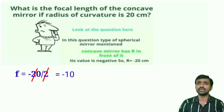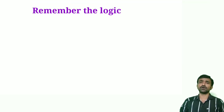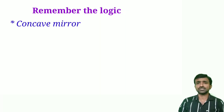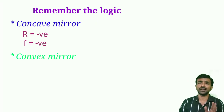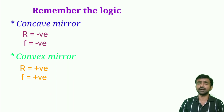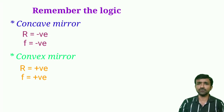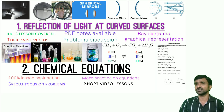If you get a positive answer, that indicates a convex mirror. Remember: for a concave mirror, both the radius of curvature and focal length are always negative, as they are measured in front of the mirror. For a convex mirror, the focal length and radius of curvature are measured behind the mirror, so both are always positive.